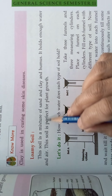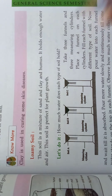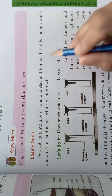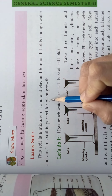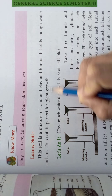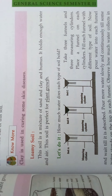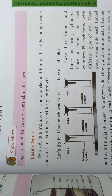The next type of soil is loamy soil. Loamy soil is a mixture of sand, clay, and humus. It holds enough water and air. This soil is perfect for plant growth. Loamy soil is the best soil for growing plants.